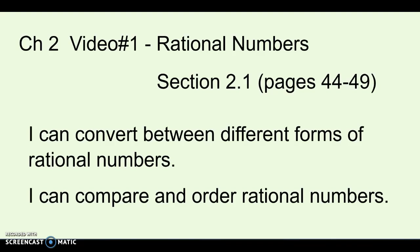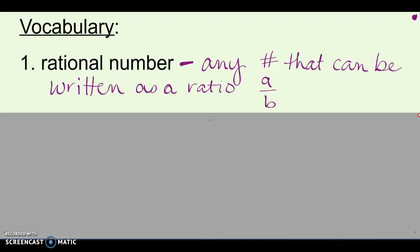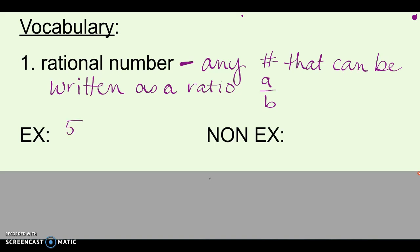The first thing is to figure out what rational numbers are. On the next slide we'll talk about some vocabulary. A rational number has a slightly confusing definition, but we'll look at examples. It's any number that can be written as a ratio A over B. Some examples would be 5, or positive 5, because you could write 5 over 1.